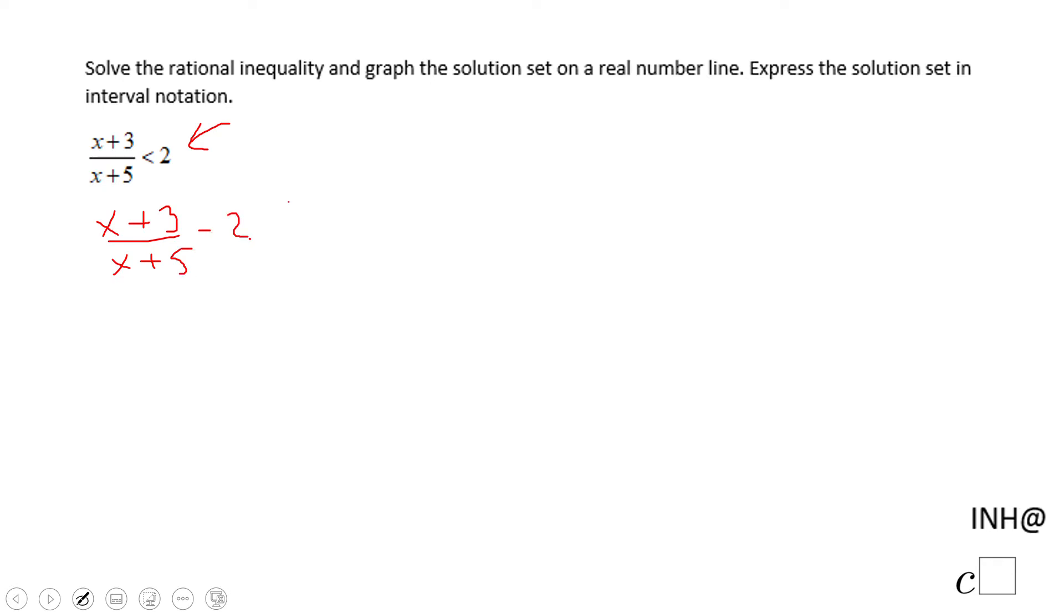Now we're going to have to combine these two expressions, and we're going to have (x + 3)/(x + 5) minus two times (x + 5) over (x + 5), less than zero.